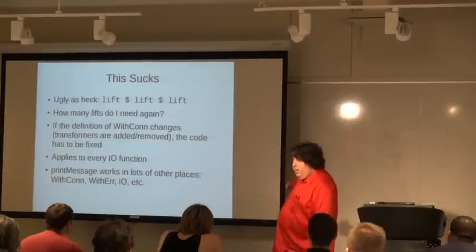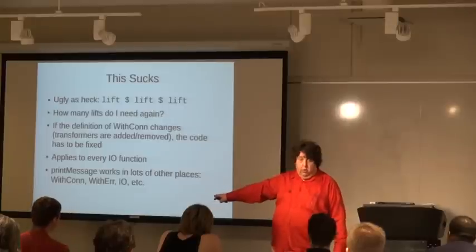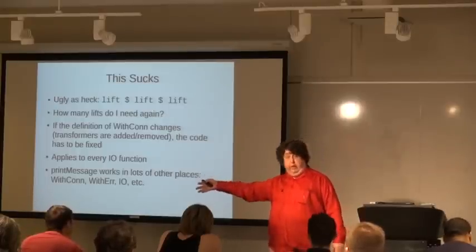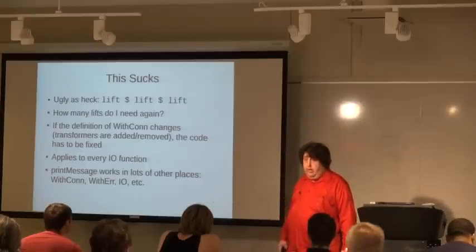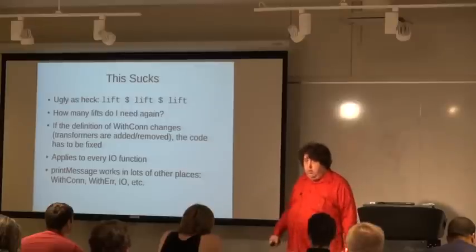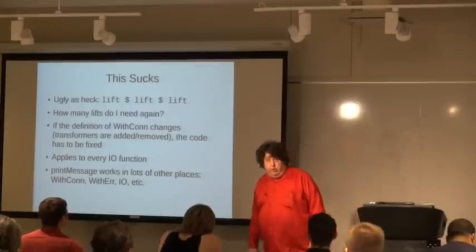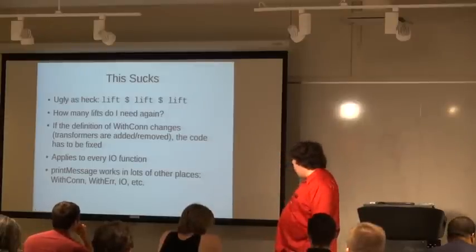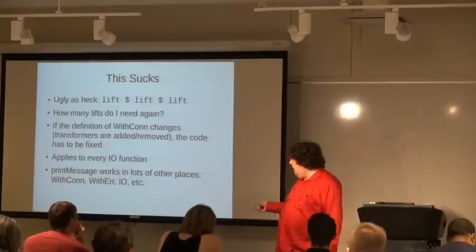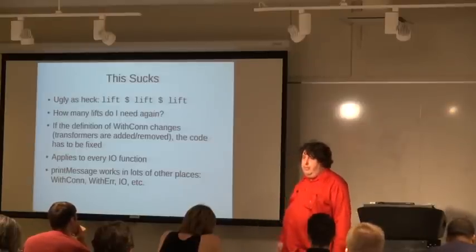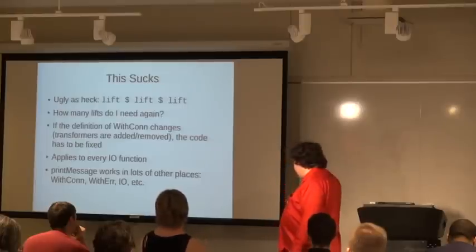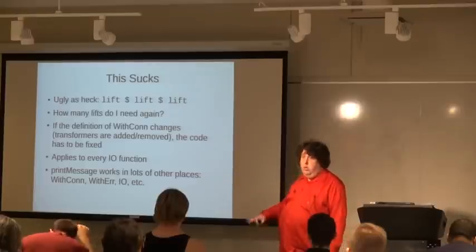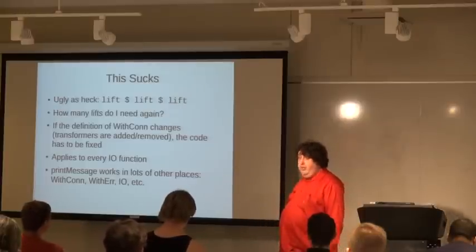If you want access to the database connections pool, it's got to be lifted once — a different number of lifts than from IO. If you want to do something in WithError, that's lifted twice. And lastly, printMessage works in a lot of other places — it works in WithCon, WithError, in IO. It's pretty general.